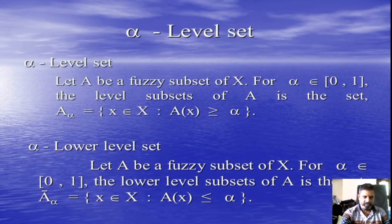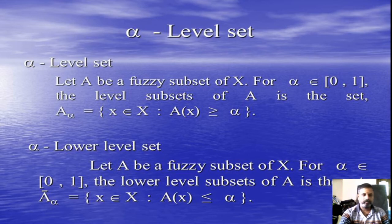Next, there are two kinds of alpha level sets. One is α-level set or upper level set. Another one is α-lower level set. First, we see the definition of α-level set. Let A be a Fuzzy Subset of X. Let α ∈ [0,1]. The level subset of A is the set A_α = {x ∈ X : A(x) ≥ α}. Similarly, lower level set is A(x) ≤ α.